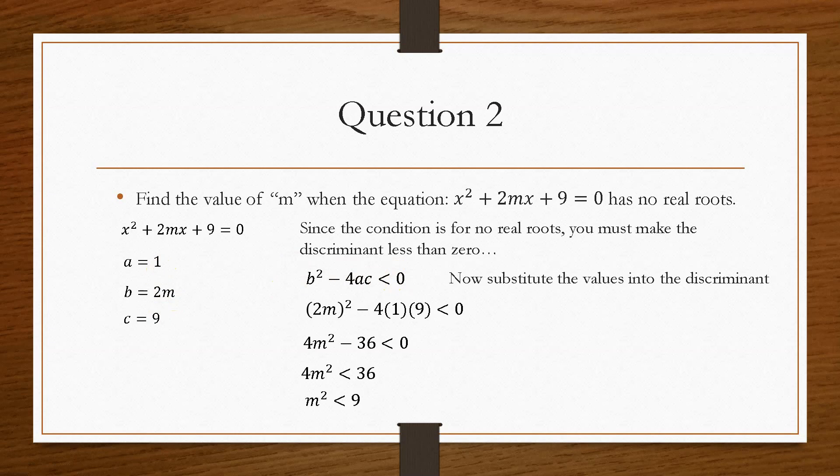Rearrange this. So we get m squared is less than 9. So m is less than the square root of 9, which means that m is less than 3.